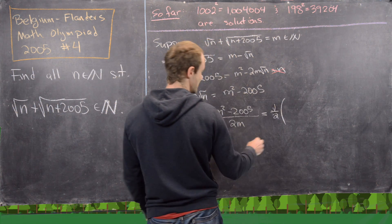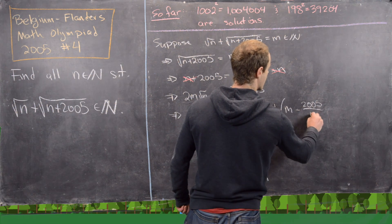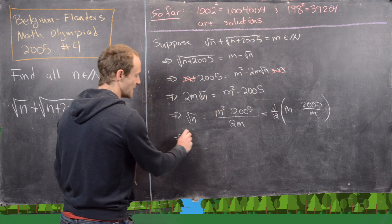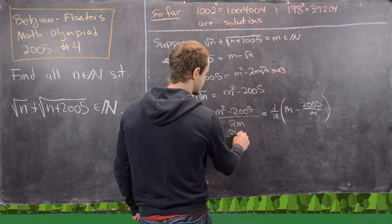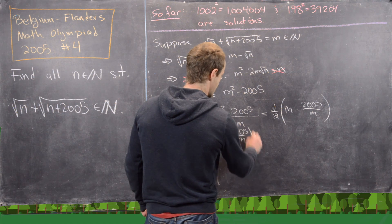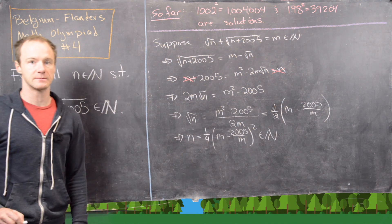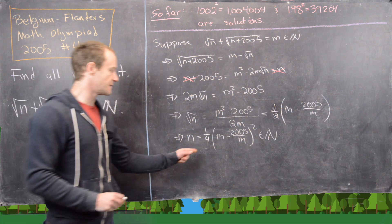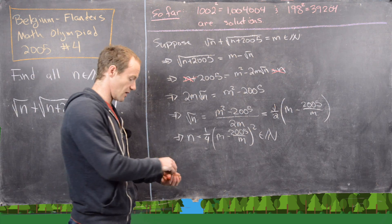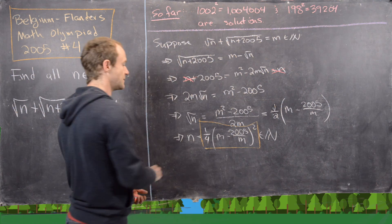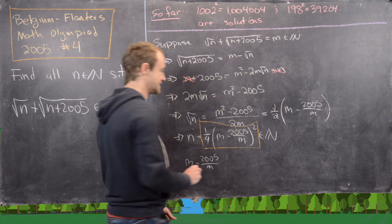We can rewrite √n = ½(m - 2005/m). Squaring both sides again gives n = ¼ · (m - 2005/m)². Since n must be a natural number, this entire expression must be a natural number, which requires the quantity (m - 2005/m) to be a natural number.